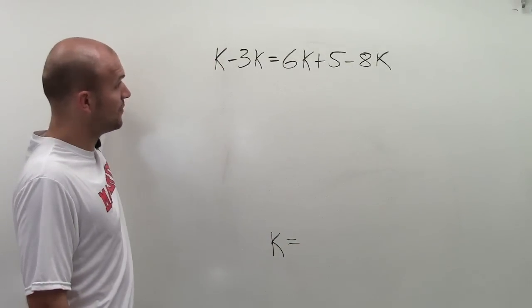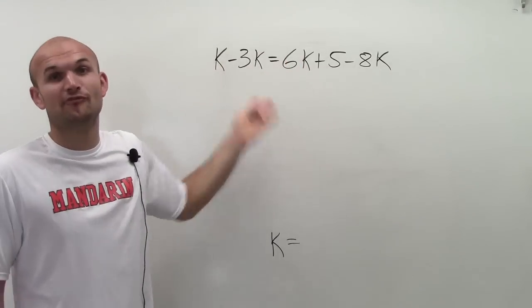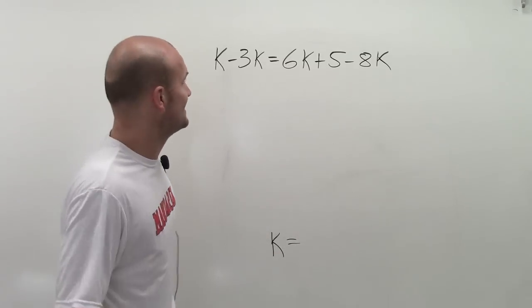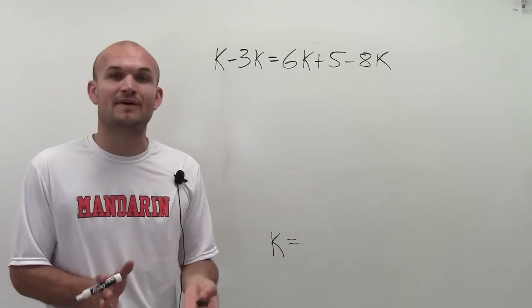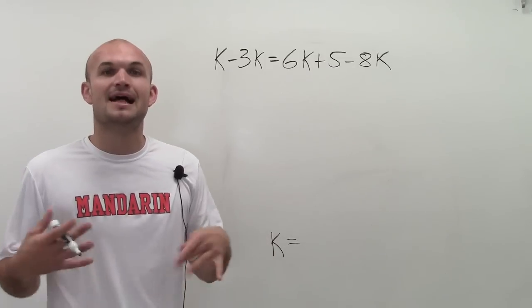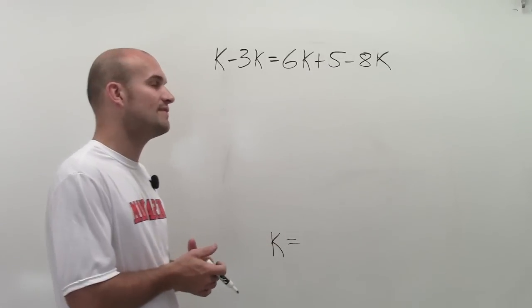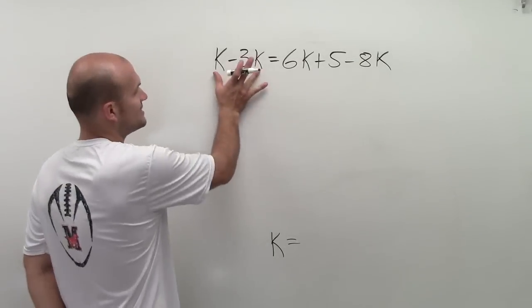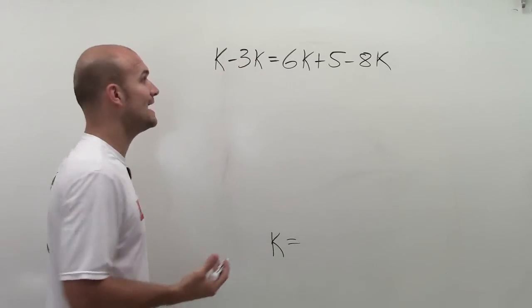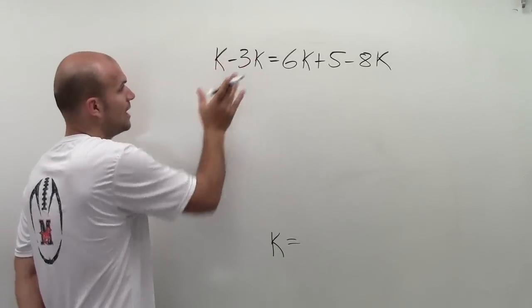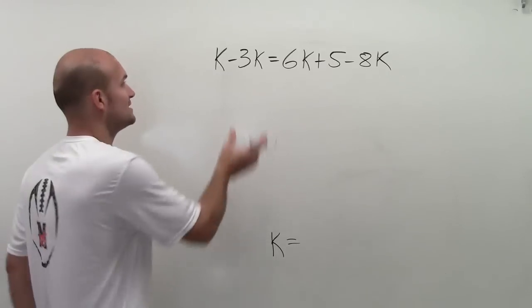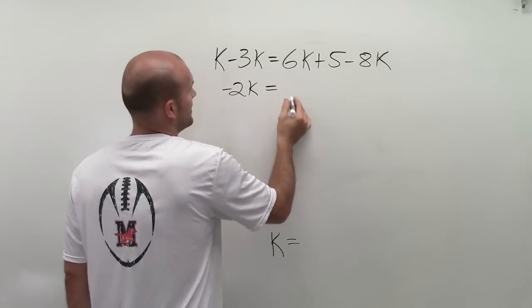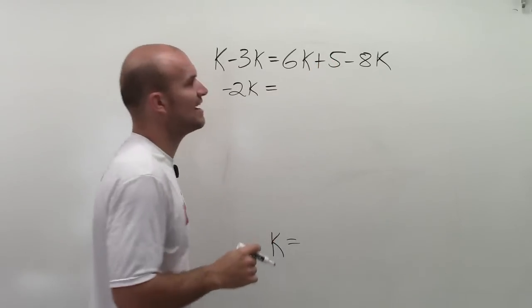Here I have four k's, four variables, so I need to combine these together. I'm going to try to simplify the left and the right side of my equation, then use my reverse order of operations to solve. On the left side, these are like terms since they both have k as factors. I can combine these. So k minus 3k is negative 2k equals 6k plus 5 minus 8k.